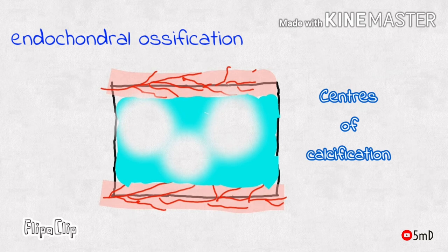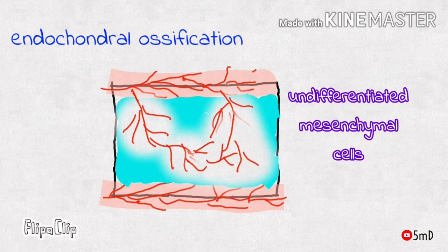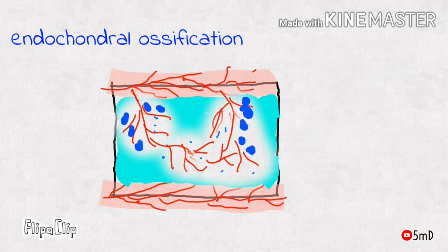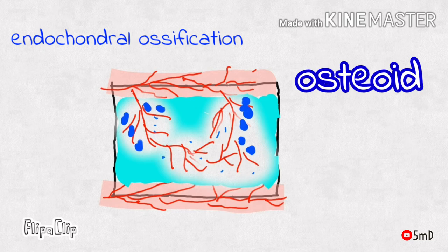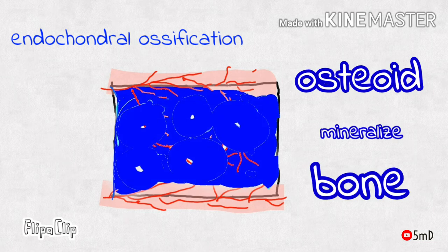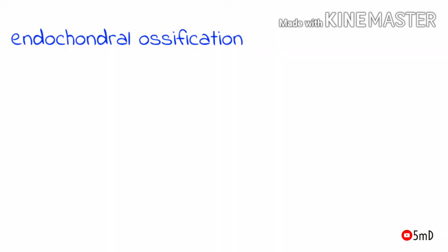Blood vessels from the perichondrium invade the calcified cartilage matrix, bringing along undifferentiated mesenchymal cells which differentiate into osteoblasts. The osteoblasts secrete osteoid matrix, which eventually mineralizes to form bone. This is how cartilage turns into bone in endochondral ossification.